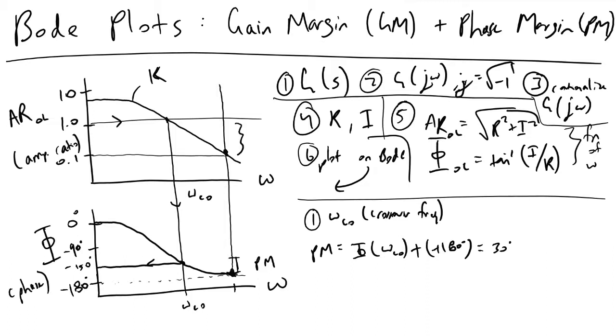And so the gain margin is this region here, which we can visually see is simply 1 minus 0.1, which equals 0.9.